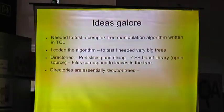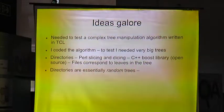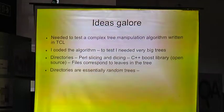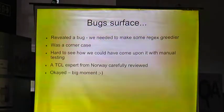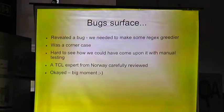This is another case where Fuzz helped. We had an algorithm written in TCL — a programming language — but I needed very big trees. It was a tree manipulation routine, and where do I get the trees? Obviously, directories — directories are random trees. Nobody thought of creating a tree when they created a directory. There is a Boost library which is very deep, almost 1400 levels, and we used those. We revealed a bug — it was a very corner case where a regex needed to be greedier. A TCL expert from Norway, who had been programming TCL all his life, reviewed it and said it was fine. So without Fuzz, that bug would have gone in.